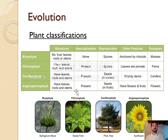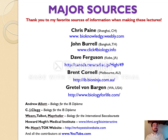Those are the four main types of plant phyla. That's the end for 5.3 Part 1. Thanks so much for watching, and have a great rest of your day. Ciao!